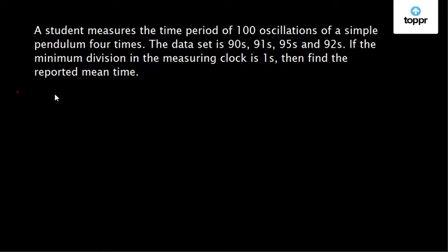A student measures the time period of 100 oscillations of a simple pendulum 4 times. The data set is 90 seconds, 91 seconds, 95 seconds and 92 seconds. If the minimum division in the measuring clock is 1 second, then find the reported mean time.